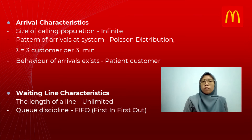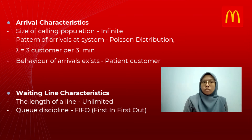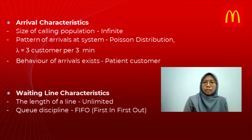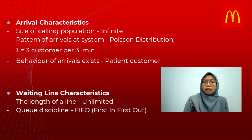The behavior of arrivals shows patient customers — they wait in the queue until they are served because they need to be patient to get their food. Moving to the waiting line characteristics, the length of the line is unlimited because staff at the drive-thru will serve all customers who have queued. For queue discipline, the order of service is first in, first out — the customer who arrived first will be served first.